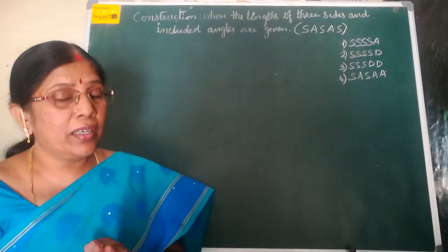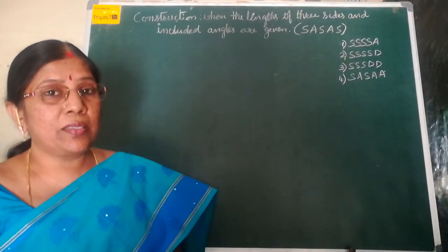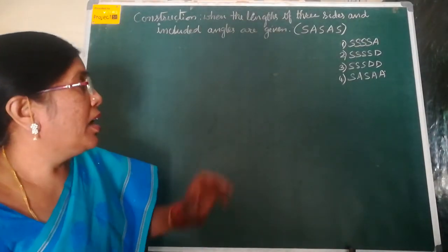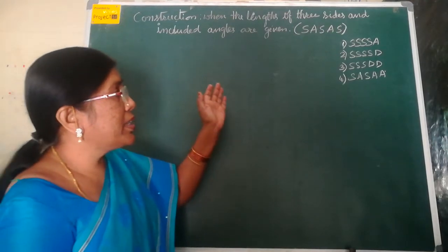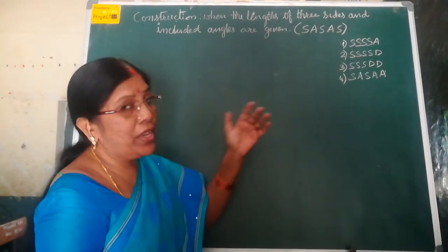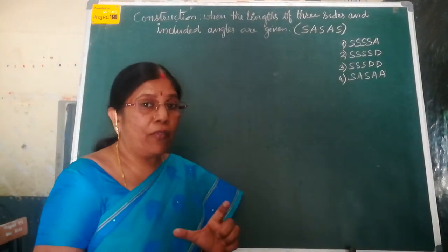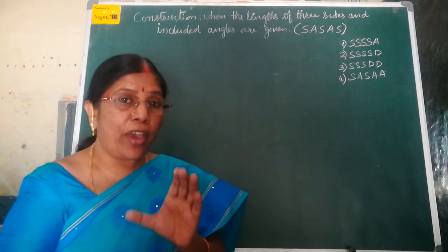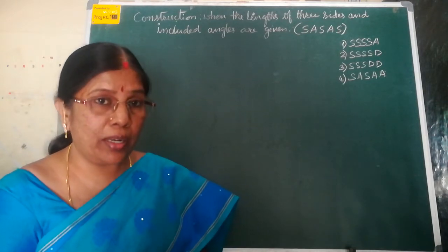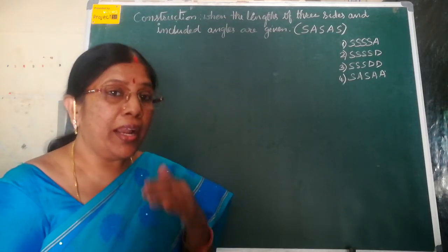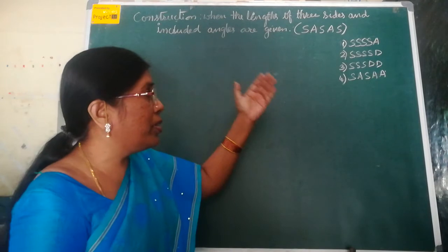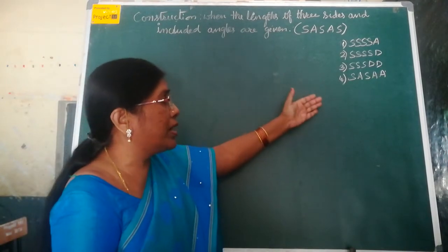In the earlier classes, we have learnt that we can construct a quadrilateral in 5 ways. We should have 5 measurements to construct a quadrilateral, and if these 5 measures are given,